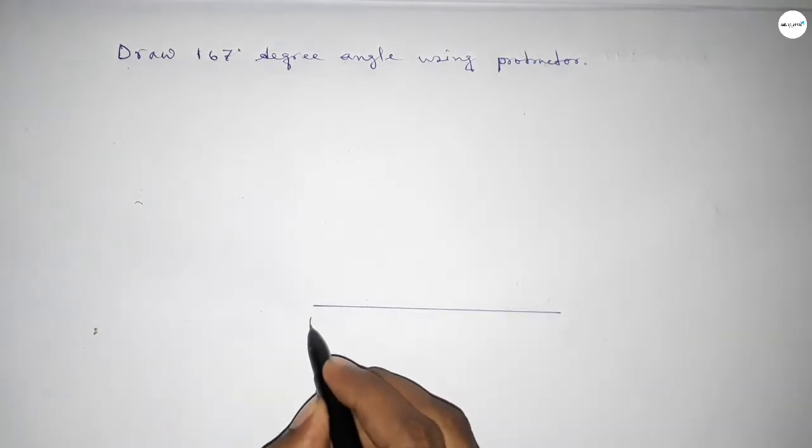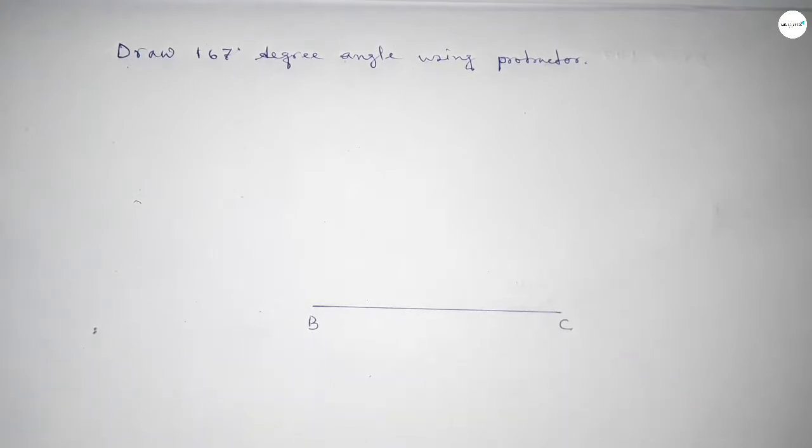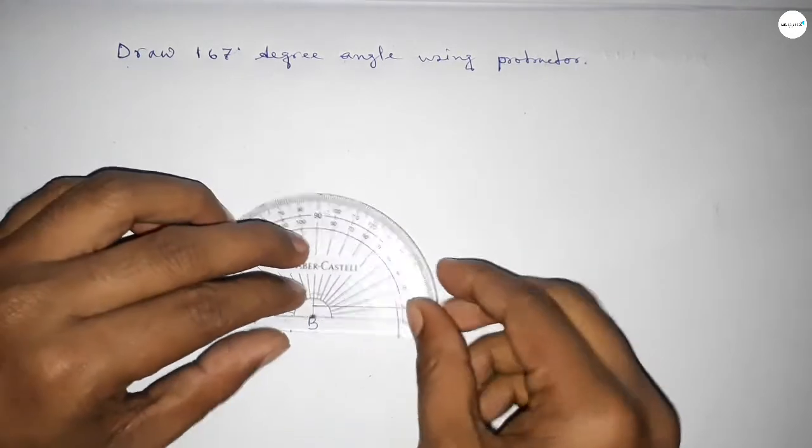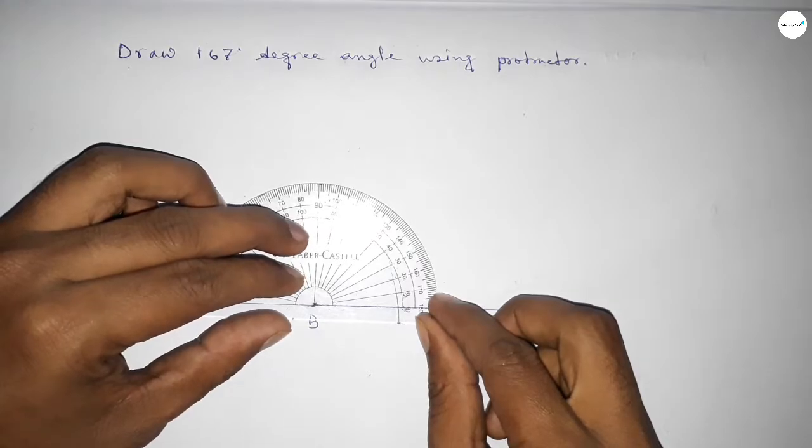Next, taking here point B and here C. Now putting the protractor on the point B perfectly, then counting the angles.